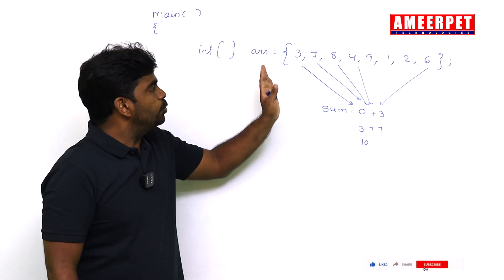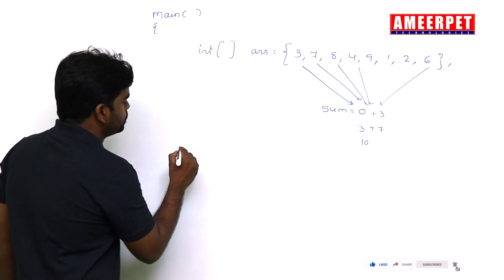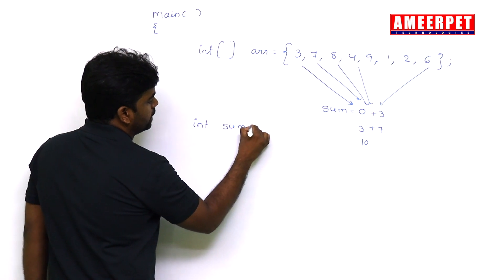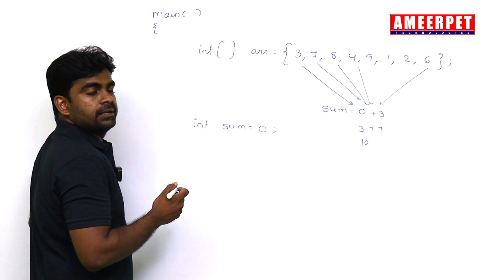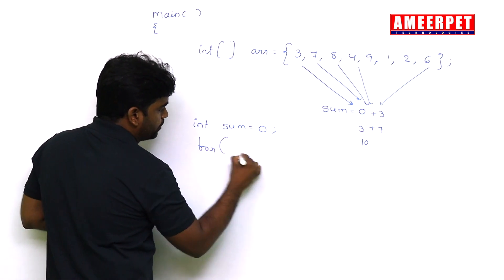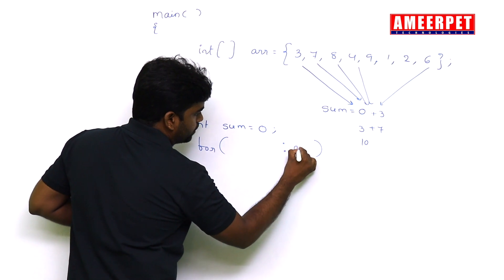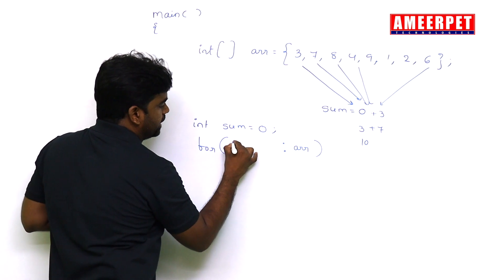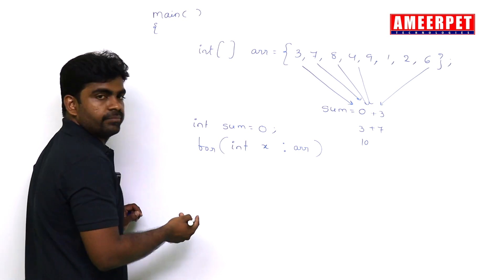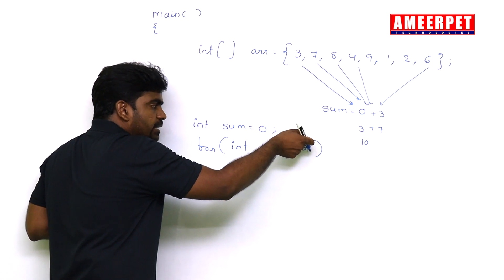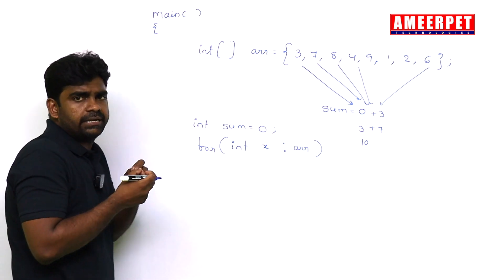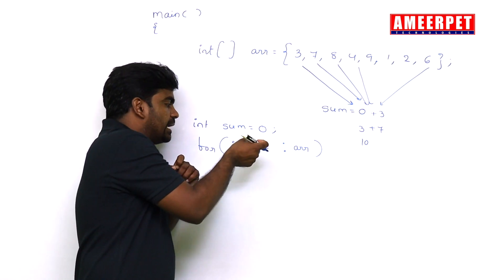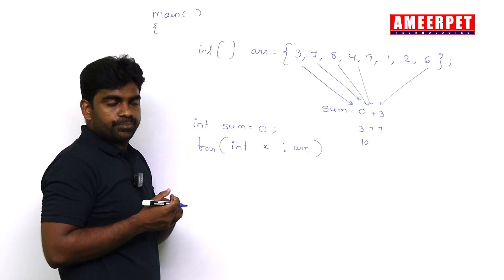So I am using the for each loop. I am taking integer sum equal to zero. After this statement, then we are repeating the loop for each array. From each array we are collecting that integer x. From each element in the array we are getting that element, and that element we are adding to the sum.